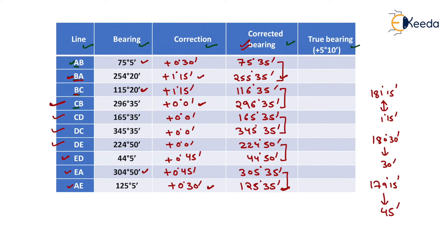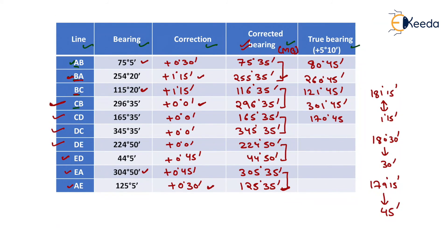The declination is given as 5 degrees 10 minutes east, so we add plus 5 degrees 10 minutes to each corrected magnetic bearing to get the true bearing. The true bearings are: AB = 80 degrees 45 minutes, BA = 260 degrees 45 minutes, BC = 121 degrees 45 minutes, CB = 301 degrees 45 minutes, CD = 170 degrees 45 minutes, DC = 350 degrees 45 minutes, DE = 230 degrees, ED = 50 degrees, EA = 50 degrees, AE = 310 degrees 45 minutes, and 130 degrees 45 minutes.